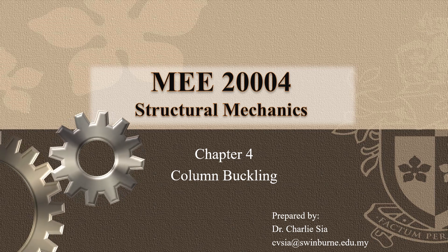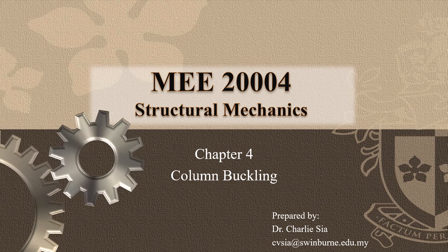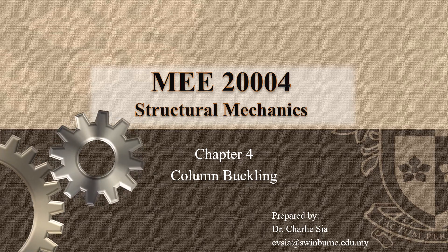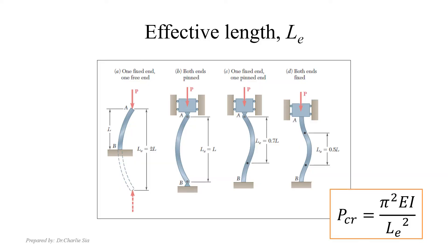Welcome back. We will continue with column buckling. As mentioned in the previous lecture, the critical load depends on the effective length, and the effective length depends on the joints at both ends of the column. For this chapter, we focus on four conditions: fixed-free, pin-pin, pin-fixed, and fixed-fixed.